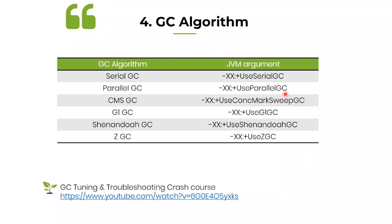The fourth important argument is GC algorithm. Garbage collection plays a very influential role in the performance of the JVM and the application. Garbage collection is influential in two perspectives: the first one is pause time, and the second one is CPU.